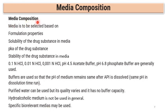For media composition selection, first check the literature for an available method — such as a USP method, OGD method, or any scientific literature providing a dissolution method. If no literature method is available, the media must be selected based on formulation properties, solubility of the drug substance in the media, and the pKa of the drug substance. Formulation properties, solubility, and pKa are very important while selecting media composition.